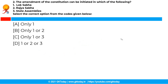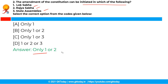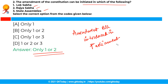The next question is: the amendment of the constitution can be initiated in which of the following — Lok Sabha, Rajya Sabha, or state assemblies? The correct answer is option B. A constitution amendment bill can be introduced in any house of the parliament. A bill for the purpose of amendment of the constitution cannot be introduced in any state legislature, but it can be introduced in any house of the parliament, either in the Lok Sabha or in the Rajya Sabha.